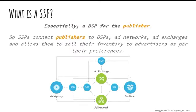SSPs, or supply-side platforms, are essentially DSPs but for publishers. This platform allows online publishers to sell display, video, and mobile ads by interacting with DMPs, ad exchanges, and ad networks. The important thing to note is that this platform is for the publisher — the supply side — and they are the ones calling the shots to maximize profits on their inventory.